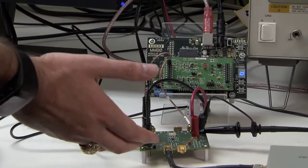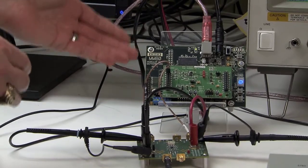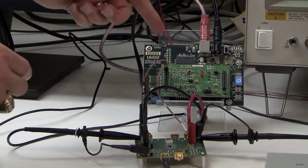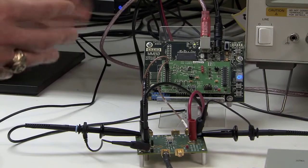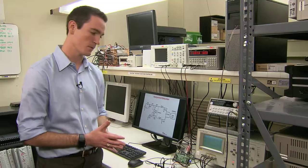First off, the THS4531 EVM is a fully differential amplifier running to the ADS8321 EVM. Now, there are some onboard op-amps which we bypass through this circuitry, so that's why you see two EVMs here.